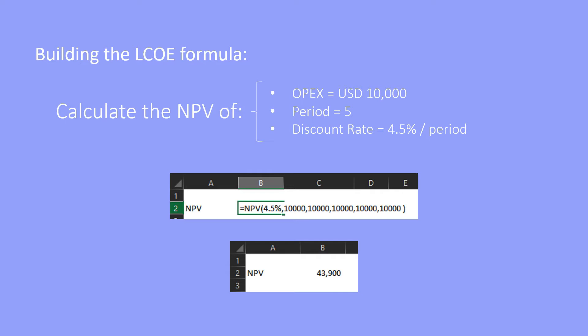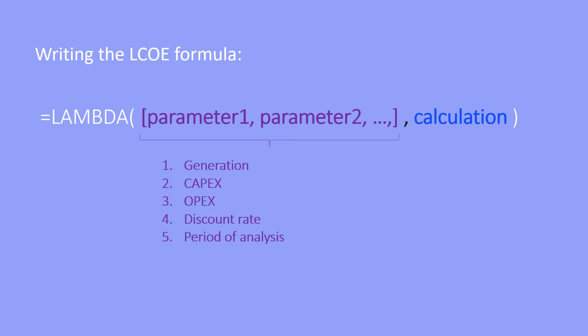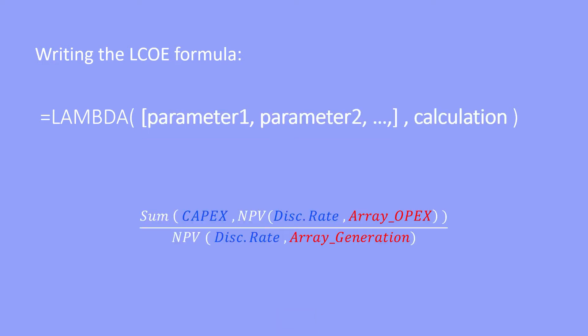Let's go back to our initial Lambda formula. We already know the arguments or parameters needed to perform our calculation. We already have the CAPEX and the discount rate per period as inputs given in the parameters. What we need to do now is to come up with a way to create an array for the OPEX and the generation so that our formula can be calculated. The Lambda function cannot understand the commands 'array OPEX' or 'array generation', so we need to create two arrays using Excel built-in formulas.